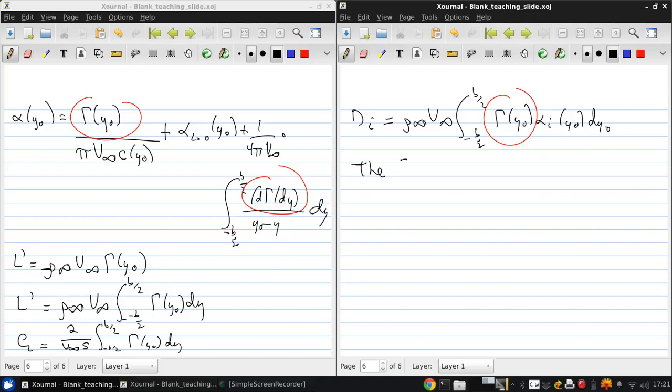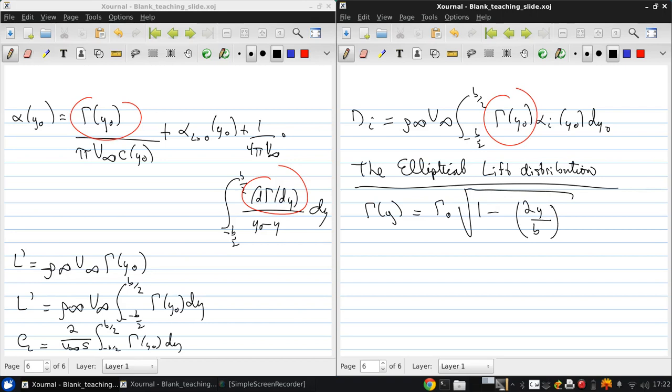The special case of interest here is the elliptical lift distribution. So this means we're positing that the circulation as a function of y is the value at the origin times 1 minus 2 times y over b squared.